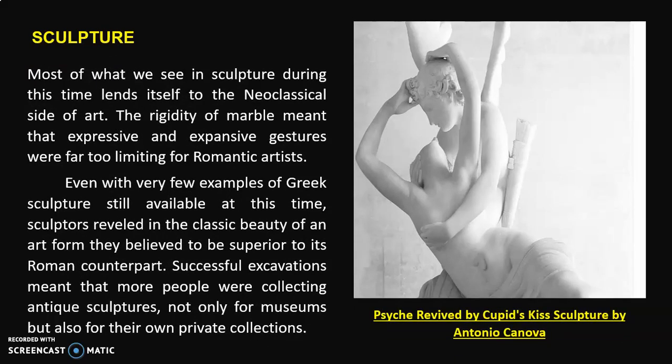Most of what we see in sculpture during this time lends itself to the Neoclassical side of art. The rigidity of marble meant that expressive and expansive gestures were far too limiting for Romantic artists. We have here an example of sculpture entitled Psyche Revived by Cupid's Kiss by Antonio Canova. Even with very few examples of Greek sculpture still available at this time, sculptors reveled in the classic beauty of an art form they believed to be superior to its Roman counterpart. Successful excavations meant that more people were collecting antique sculptures for museums and private collections.